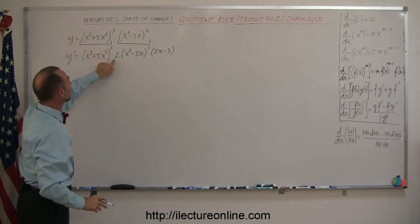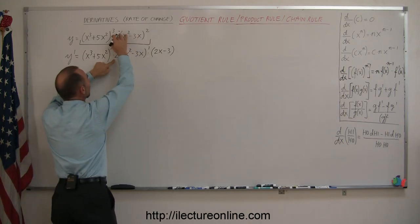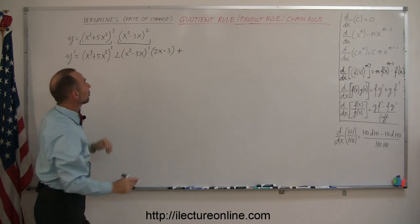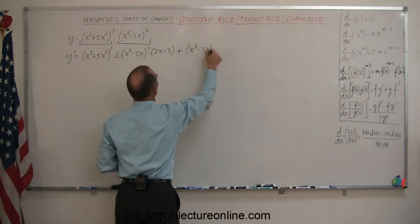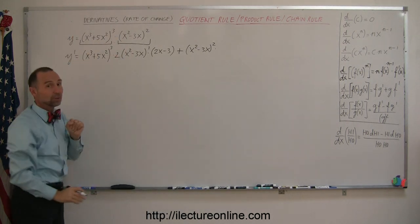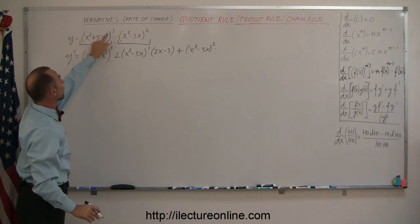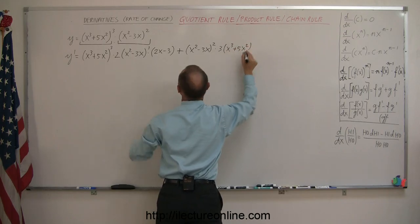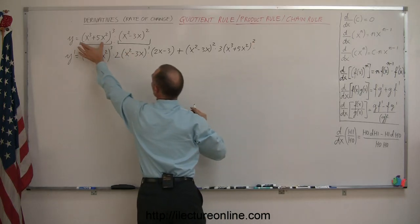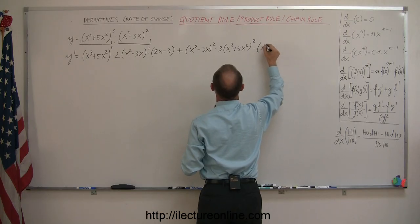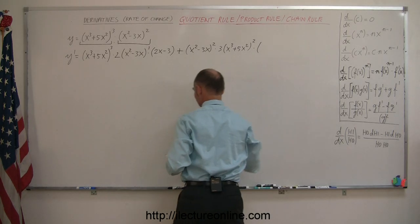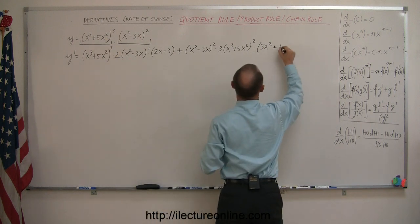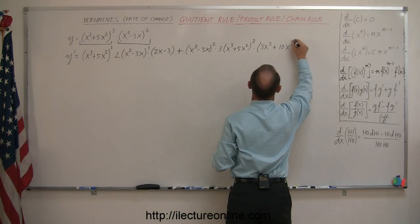That is the first times the derivative of the second, and we use the chain rule to find the derivative of the second: 2 times (x² - 3x) to the first power, times the derivative of what's inside. Plus the second part: the second function (x² - 3x) to the second power, times the derivative of the first. For that we use the chain rule again: 3 times (x³ + 5x²) to the second power, times the derivative of what's inside, which gives us 3x² + 5 times 2, which is 10x to the first power.